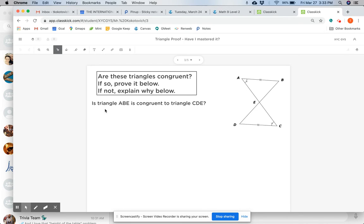This proof is asking, is triangle ABE congruent to triangle CDE? And let's say that I see that my side AB is congruent to side CD, and I want to put that into a flowchart.